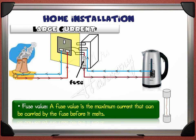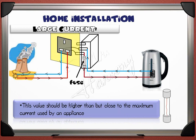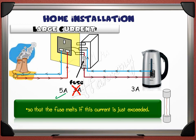A fuse value is the maximum current that can be carried by the fuse before it melts. This means that a 5 ampere fuse will blow if current reaches 5 amperes. To choose a suitable fuse, this value should be higher than but close to the maximum current used by an appliance. So if our appliance works with 3 amperes, we cannot choose a 3 ampere fuse because it will blow with the normal current. We choose a fuse with a value that is next and close to the current needed — in this case, the next and closest is the 5 ampere fuse, so that the fuse melts if this current is just exceeded.